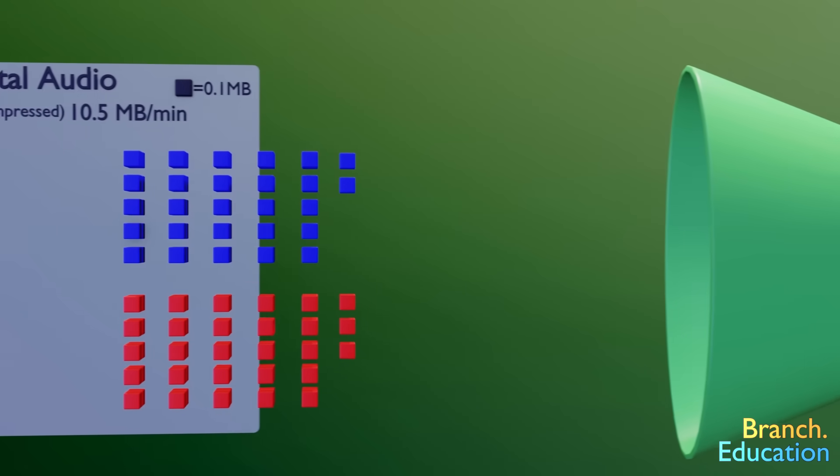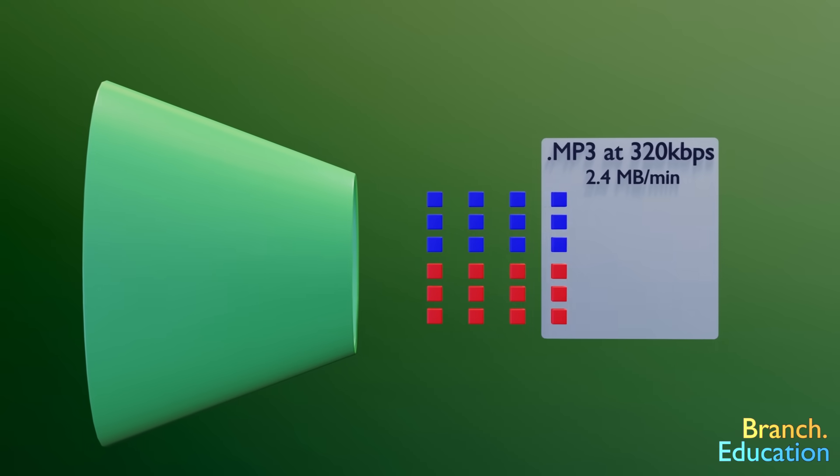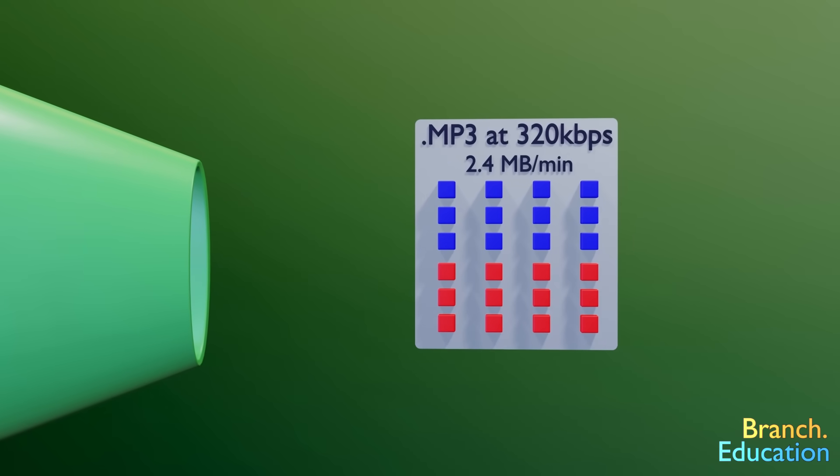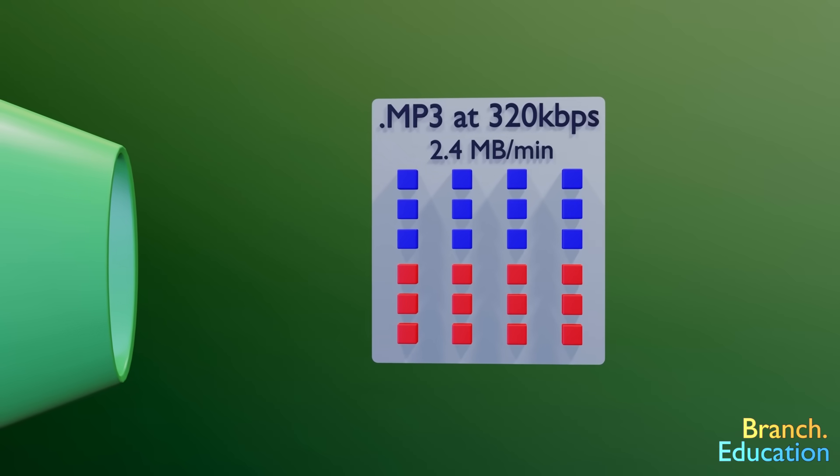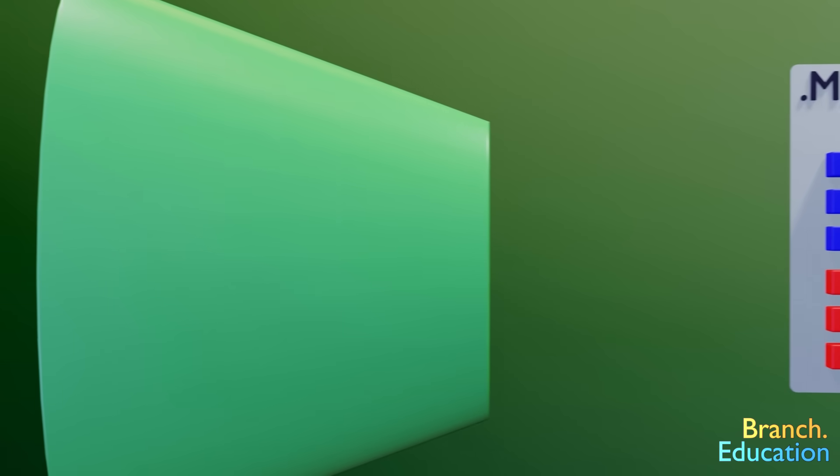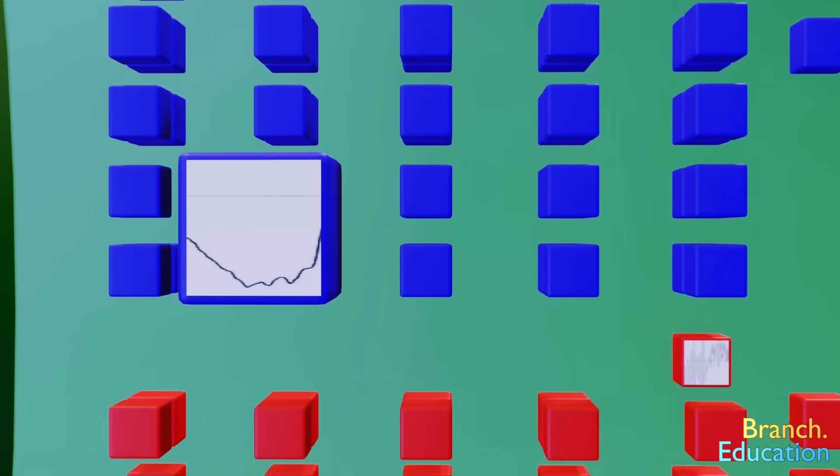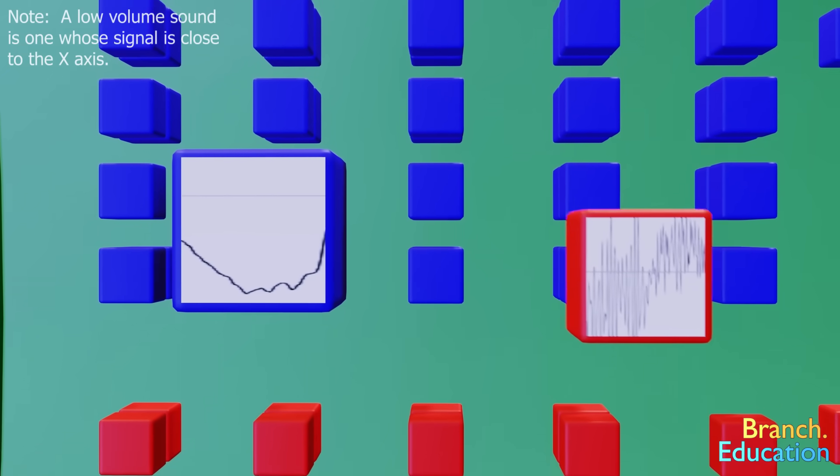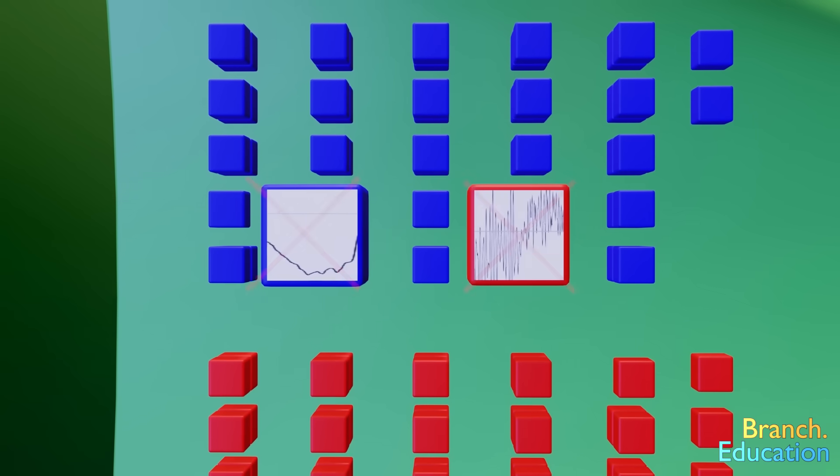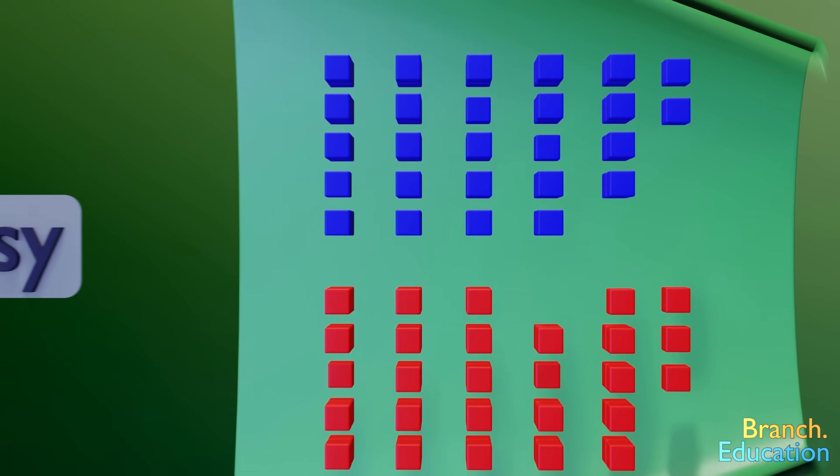MP3 files at 320 kilobits per second stereo reduce the file size to around 2.4 megabytes by processing every millisecond of audio and finding elements in the uncompressed audio that humans aren't good at hearing. This psychoacoustic algorithm finds elements in the audio that have exceptionally low volume sounds, very high-pitched sounds, or sounds very close together which the MP3 compression discards, thereby saving space and making it a lossy compression format.